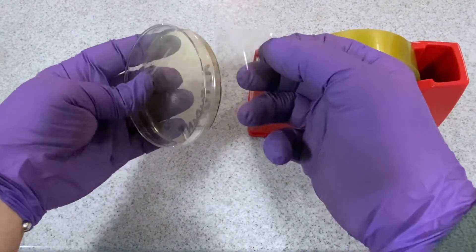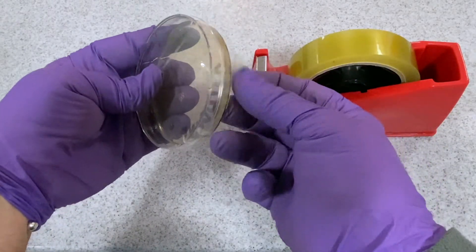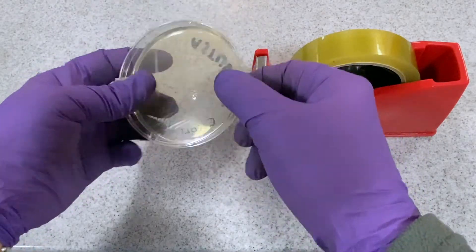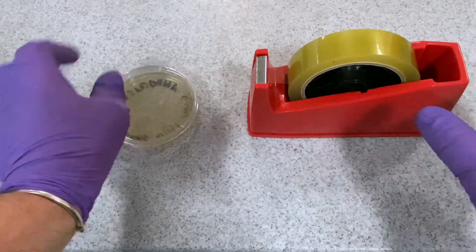The petri dish lid is secured by means of sellotape as previously described. Do not seal completely around the petri dish.